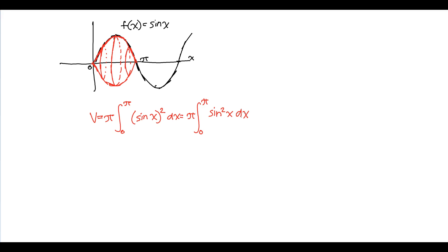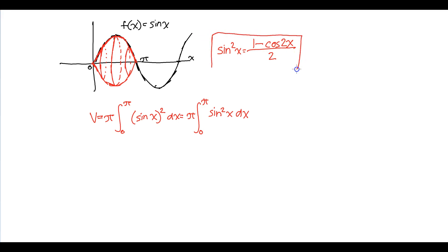Now, sine squared of x — you can't really do a u-substitution here. However, if you remember trig identities well, you might remember that sine squared of x equals (1 minus cosine 2x) over 2. Even if you didn't know this, it's important to keep this one because it will pop up again. Using this identity, we can substitute in for sine squared of x: you have (1 minus cosine 2x) over 2 dx.